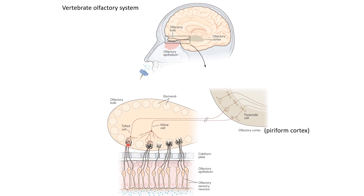The first region of the brain that receives olfactory information is called the olfactory bulb. This is like the antenna lobe in the insect brain — it is also organized into glomeruli. The sensory neurons provide their information to these glomeruli, and from there the mitral and tufted cells, which are like the projection neurons of the insect brain, carry this information to higher brain areas. The biggest target is the olfactory cortex, also called the piriform cortex. Notably, these mitral and tufted cells go from the olfactory bulb directly to the cortex without passing through the thalamus.